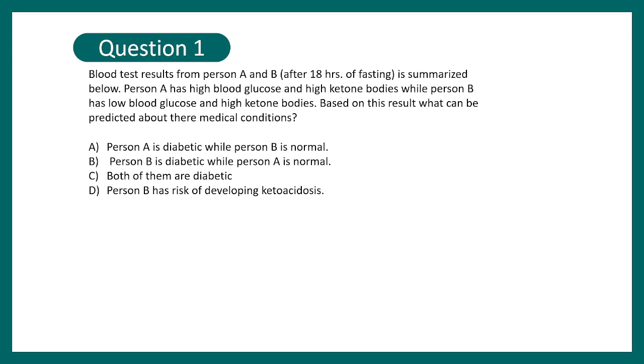Based on this result, what can be predicted about their medical conditions? Person A is diabetic while person B is normal, person B is diabetic person A is normal, both of them are diabetic, or person B has risk of developing ketoacidosis. The correct answer here would be option A.